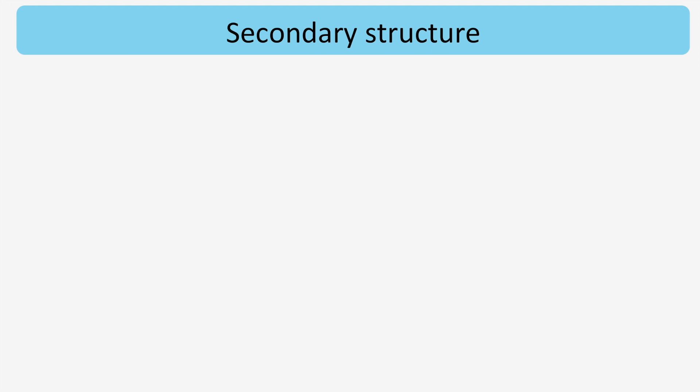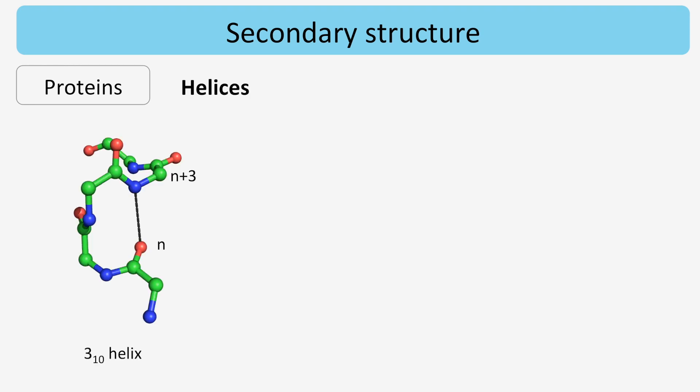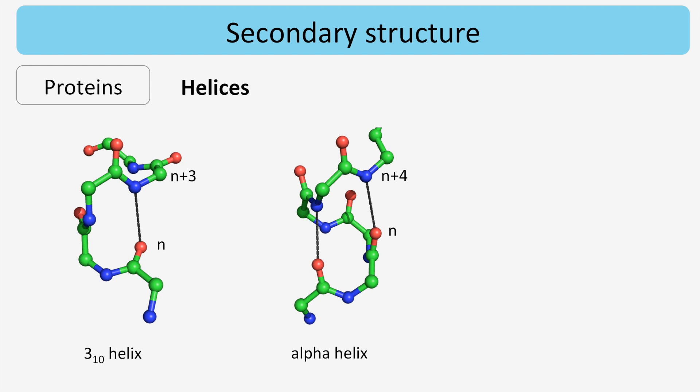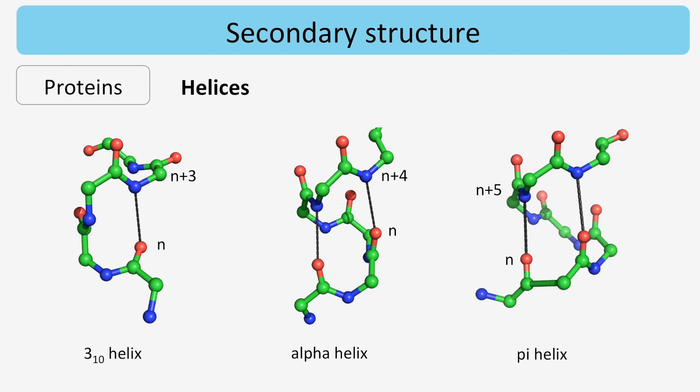Let's revise secondary structure. Secondary structure elements of proteins are helices and sheets. Helices can be subdivided into 3-10, alpha, and pi-type according to the hydrogen bond pattern.